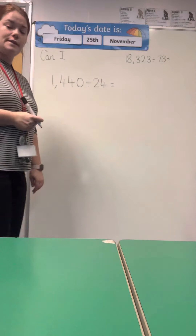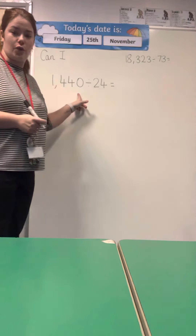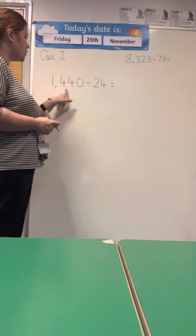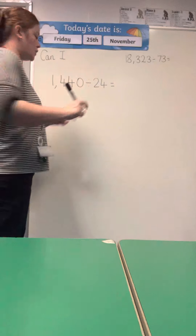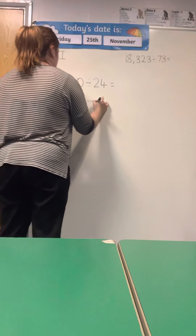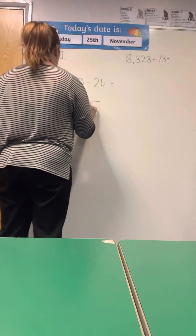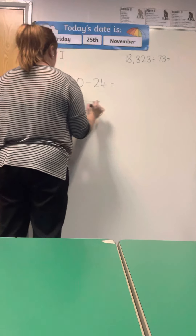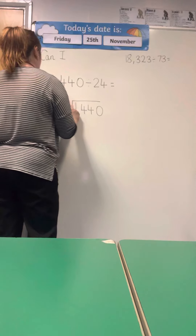Today we're going to be looking at a long division question. My equation is 1,440 divided by 24. I'm going to set it up the same as I would for the bus stop method, so 1,440 divided by 24.